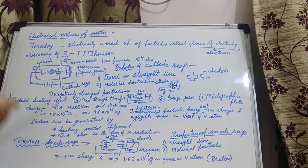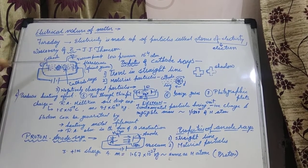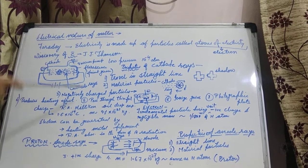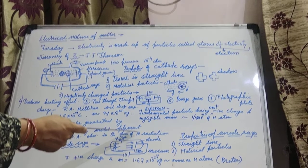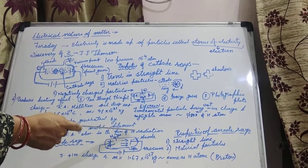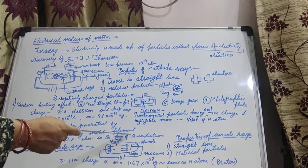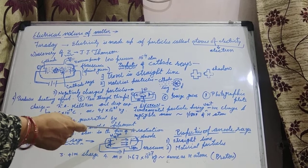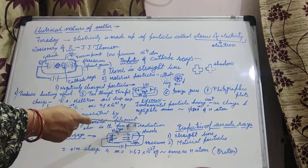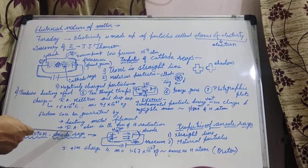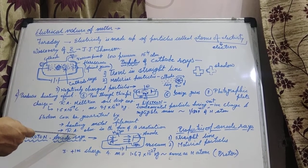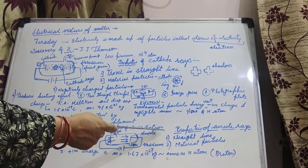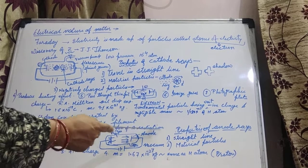One more thing — as we have generated electrons in this discharge tube by providing high volt current and low pressure conditions, electrons can also be generated by heating a metal filament. Metals are electropositive in nature — they lose electrons readily. So when metals are heated, they also eject out electrons. Similarly, you have studied radioactivity: radioactive rays — alpha, beta, gamma. Radioactive elements in the form of beta radiation emit out electrons. Beta radiations are made up of electrons only.